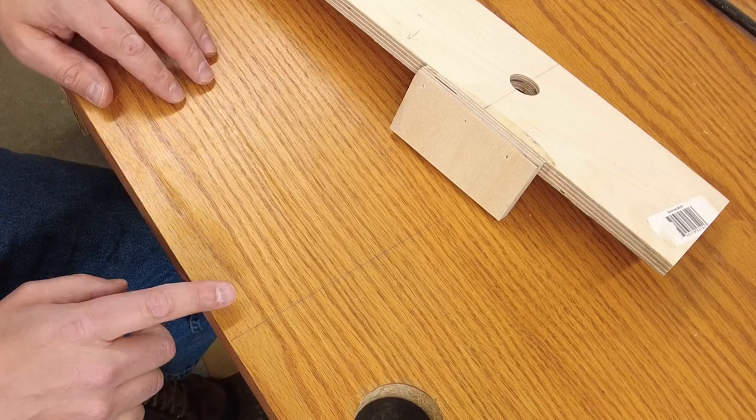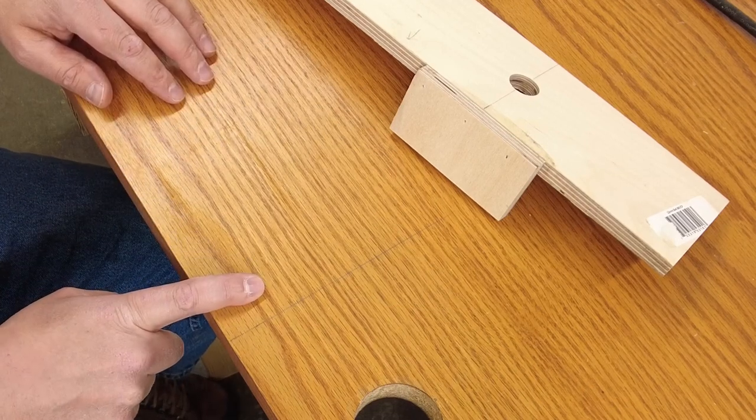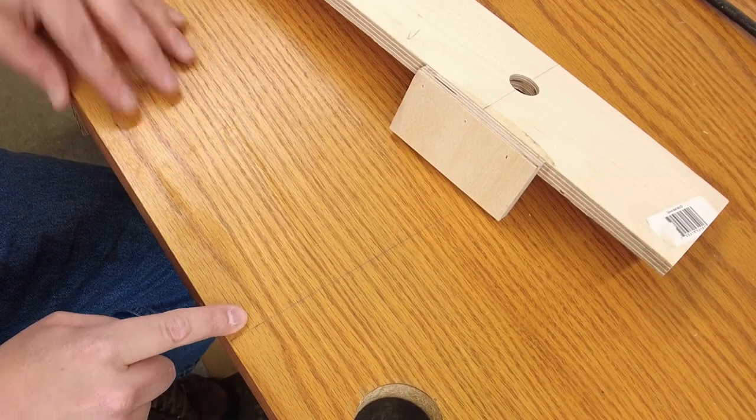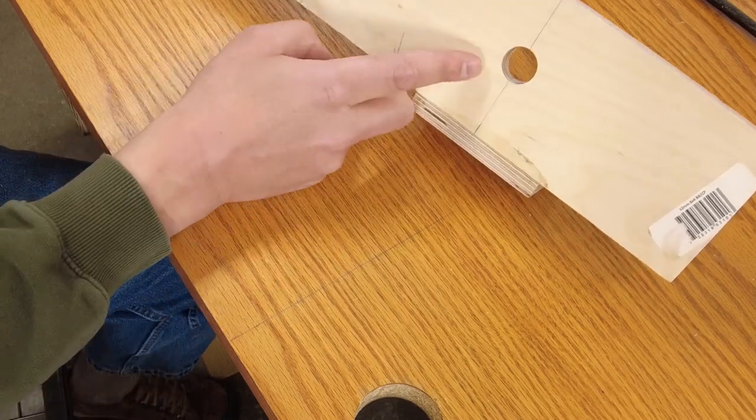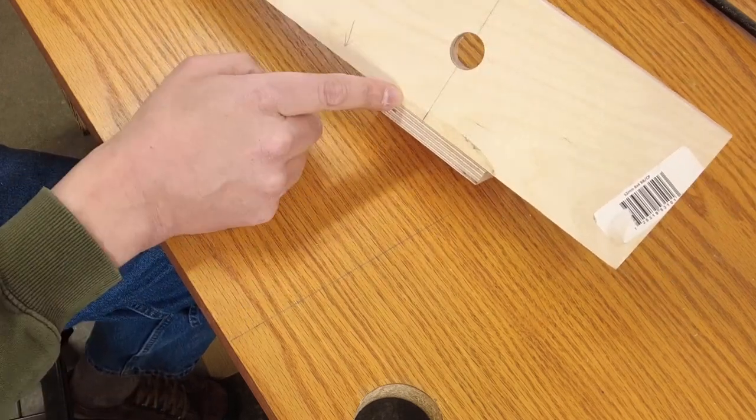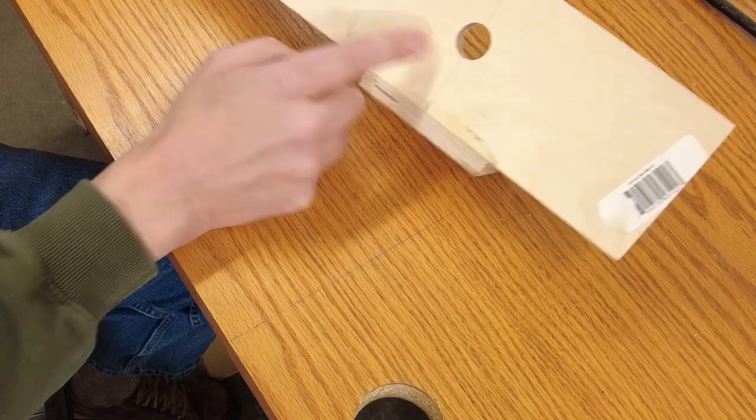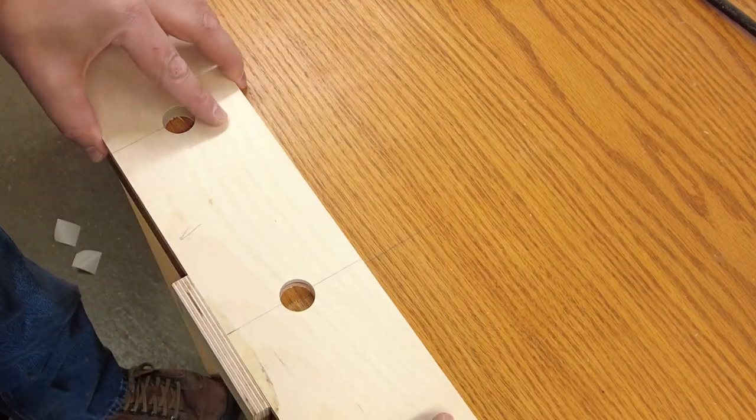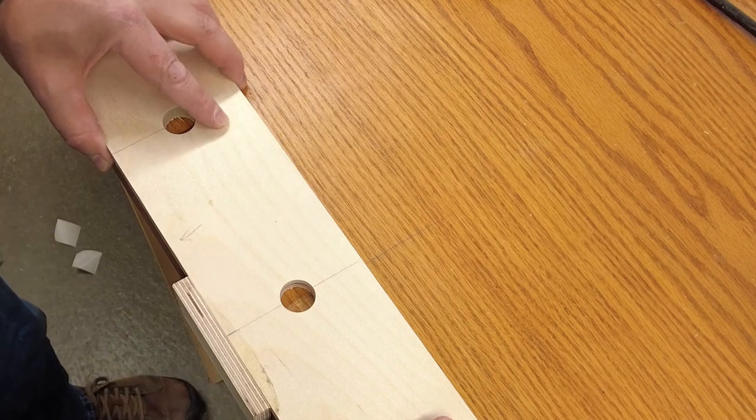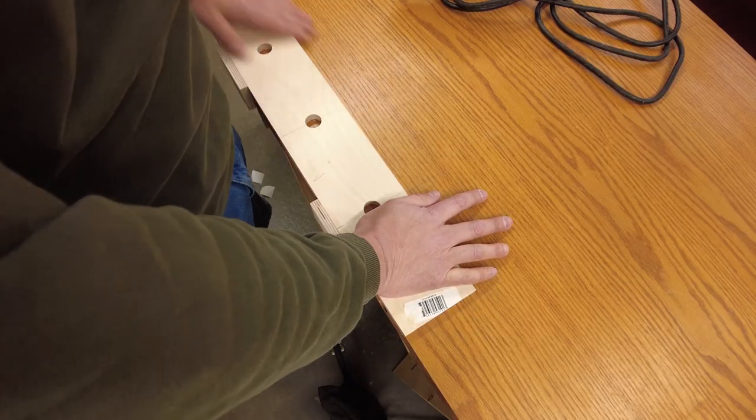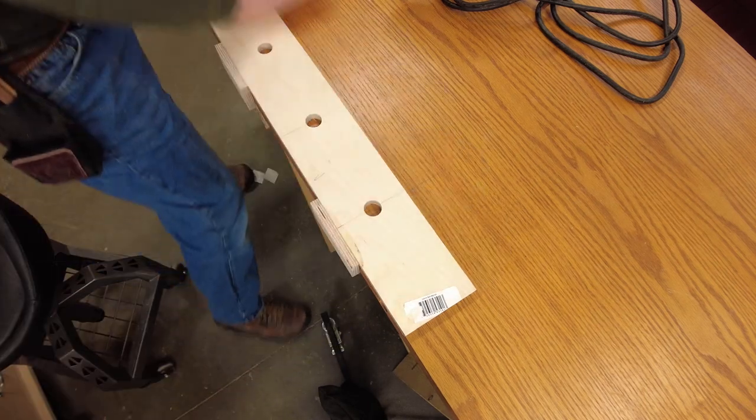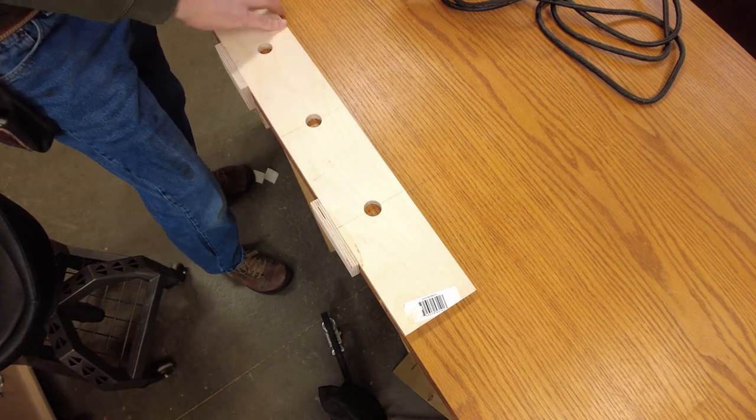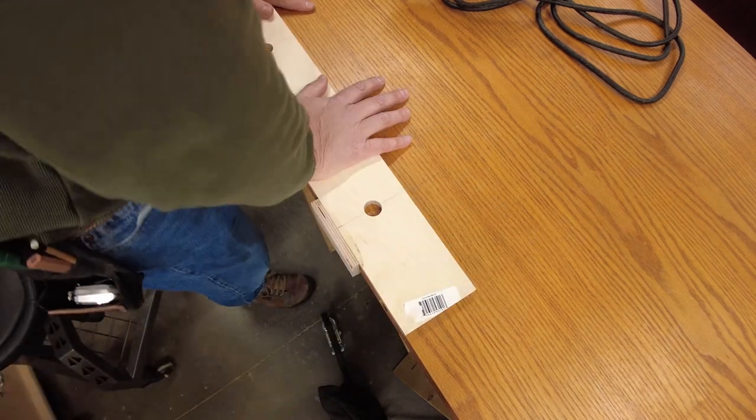So before I get too far down the road here I wanted to call out this line I made on the workbench. This is the center of the workbench and that will line up with the center of this hole. I made a line that shows where the center of the hole is here. So now I can just line these two lines up. This is easier if I stand up and look down so that they're both in the same orientation. And now I can just push on the jig and that's sticking down pretty well.